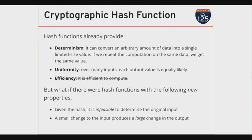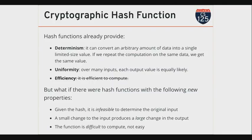The second property is: a small change in the input produces a huge change in the output. This is connected to the first property. If the output doesn't change with a small change to the input, then when you find a hash close to the value you're looking for, you know your input is close too — and we don't want that. So a good cryptographic hash function, even if I change one bit in the input, the hash value jumps to a completely new part of the hash space. The final requirement is that it's difficult to compute — not easy.